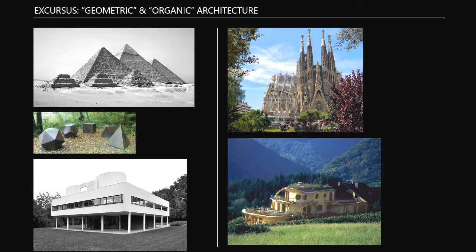Then there were people - the pictures on the right side are examples - who said, let's build like nature. Let's imitate it. The house on the bottom is a funny example. There are actually some famous or less famous ones where people imitate nature by building these shapes. This is what most commonly the term organic architecture is used for.